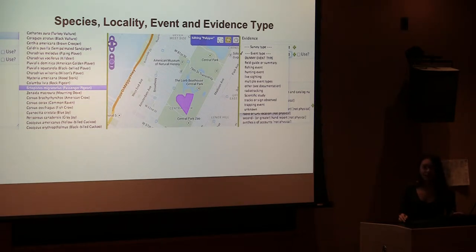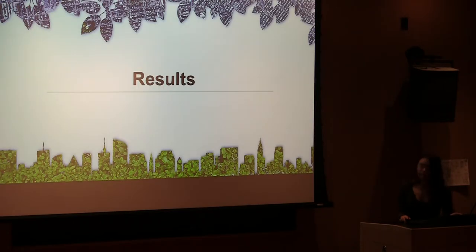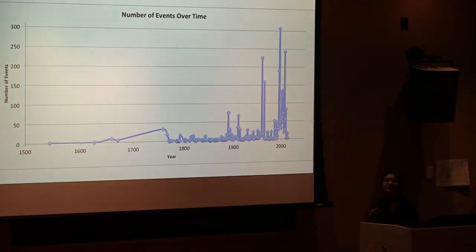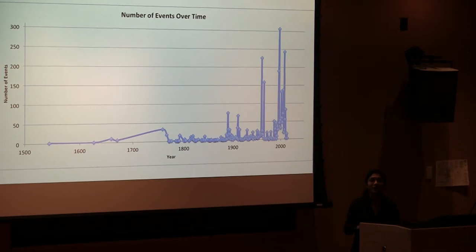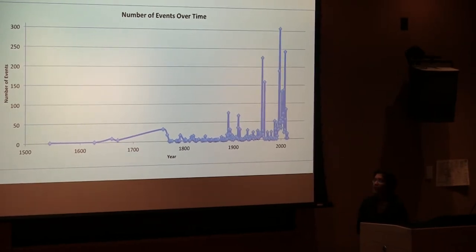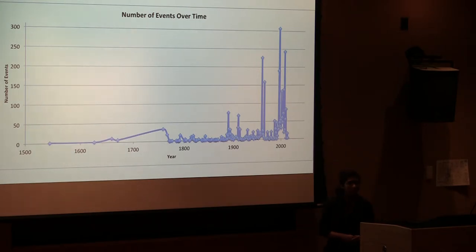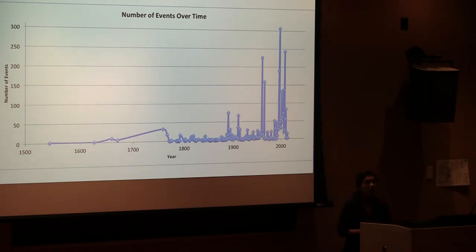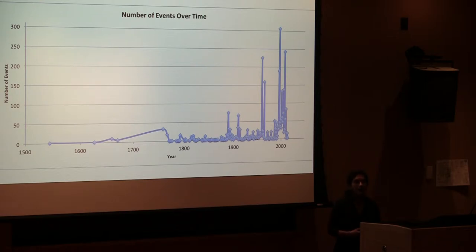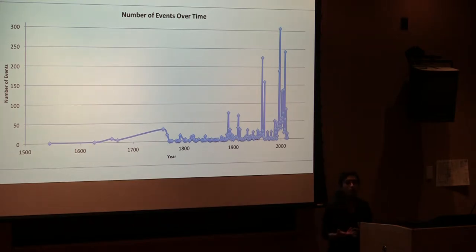We recorded nearly 3,300 events spanning approximately 470 years. One of the earliest events was in 1626 — a sighting of a beaver in Manhattan — and one of the most recent was in 2012, a sighting of a deer in Queens. There is a very high peak in 1996 representing a sighting of over 300 bird species in Jamaica Bay Park. The majority of events occurred after 1900, due to greater interest in species reporting, better record keeping, and large published books and databases contributing to those peaks.